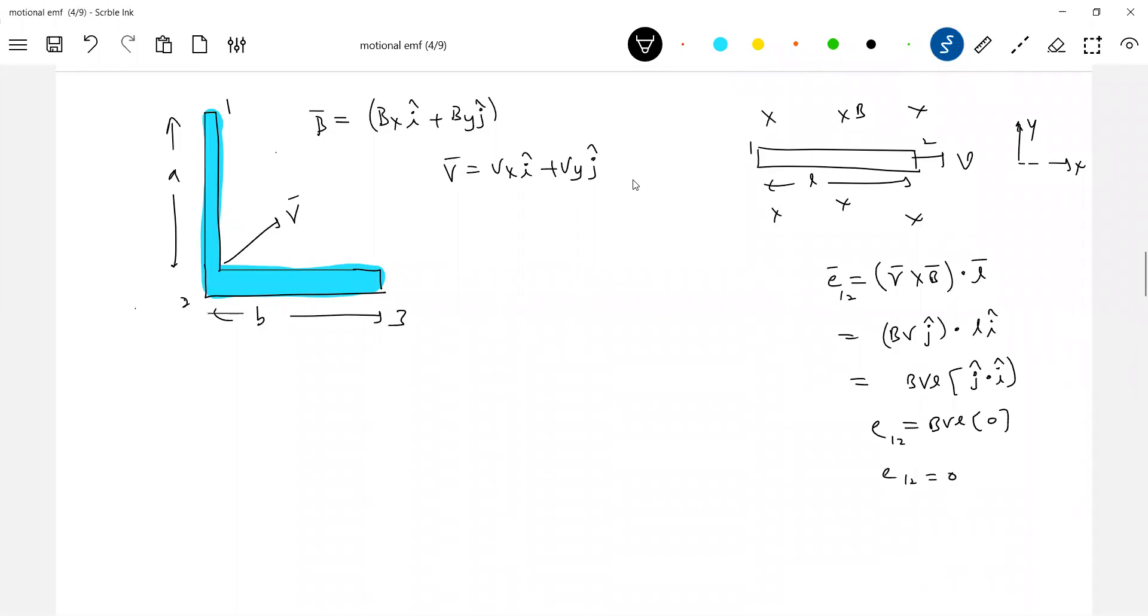Will there be any EMF induced between three four? If it is a thin rod, then what is the width of the rod? Will be zero. Of course EMF induced three four will be non-zero, it depends upon the width, the thickness of the rod. If thickness is appreciable you can go for it, if thickness negligible then you have to put E34 zero.